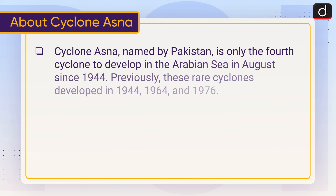Cyclone Asana, named by Pakistan, is only the fourth cyclone to develop in the Arabian Sea in August since 1944. Previously, these rare cyclones developed in 1944, 1964, and 1976.